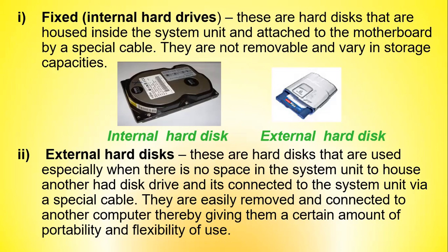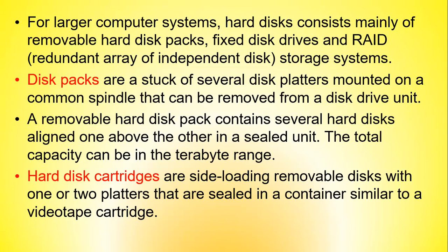Fixed hard drives, also called internal hard disks, are housed inside the system unit and attached to the motherboard by a special cable; they are not removable and vary in storage capacities. External hard disks are used especially when there is no space in the system unit to house another hard disk drive, and they connect to the system unit through a special cable externally; they are easily removed and reconnected to another computer, giving them portability and flexibility. For larger computer systems, storage consists mainly of removable hard disk packs, fixed disk drives, and redundant array of independent disk (RAID) storage systems.